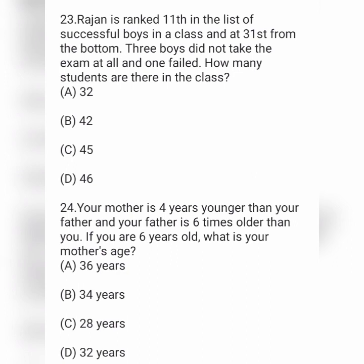Next question: Rajan is ranked 11th in the list of successful boys in a class and 31st from the bottom. Three boys did not take the exam at all, and one failed. How many students are there in the class? Option A is 32, option B is 42, option C is 45, and option D is 46.